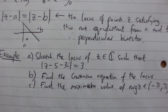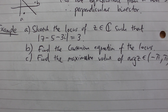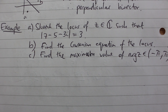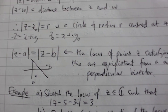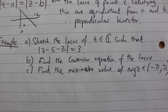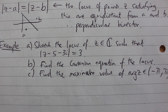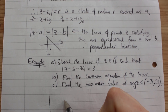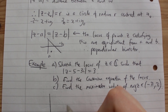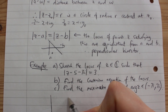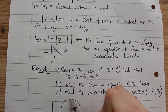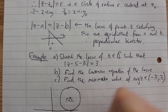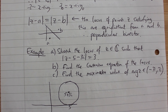For the example: sketch the locus of complex number z such that the modulus of z minus 5 minus 3i equals 3. Using the above, this is a circle centred at 5 plus 3i of radius 3. So 5 plus 3i is plotted, and we get a circle of radius 3 centred at that point as the locus.